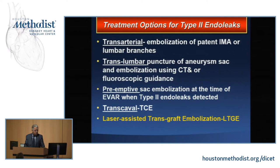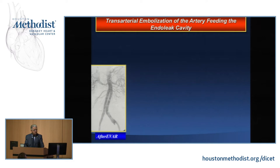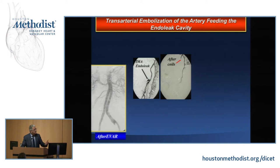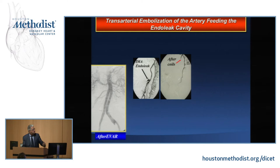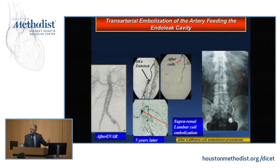There's nothing magic about laser — it has been used in many different applications, and we find it to be the easiest way. For example, in a patient with an Aneurex stent graft who had a type 2 endoleak from the inferior mesenteric, we coil embolized that, but a few years later she had iliolumbar communications. This lady ultimately had five different interventions for type 2 endoleak without resolving the problem — a never-ending issue, particularly in patients on anticoagulants.